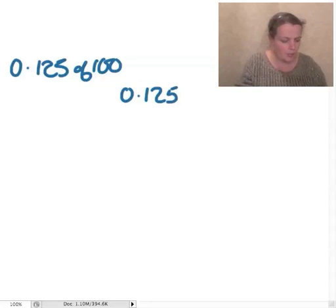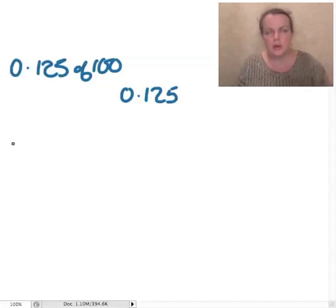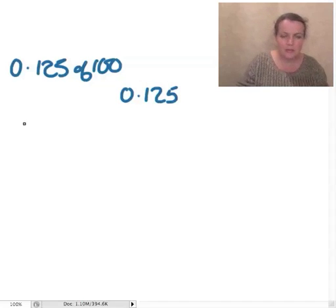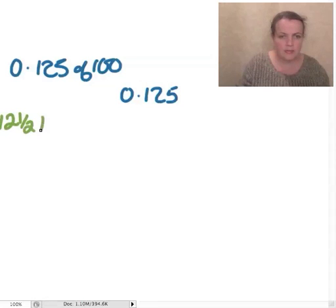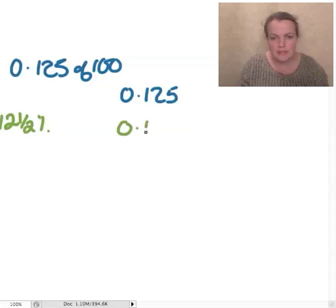The next one. We've got 12.5% of 100. So, 12% of a pound is, what does it say? 12.5% of 100. So, that would be, 12%, if we wrote it's pennies, would be that, and there's the extra half. So, those are the same.